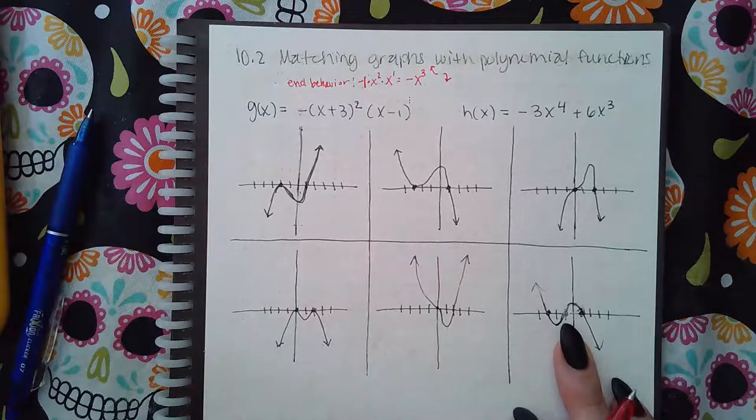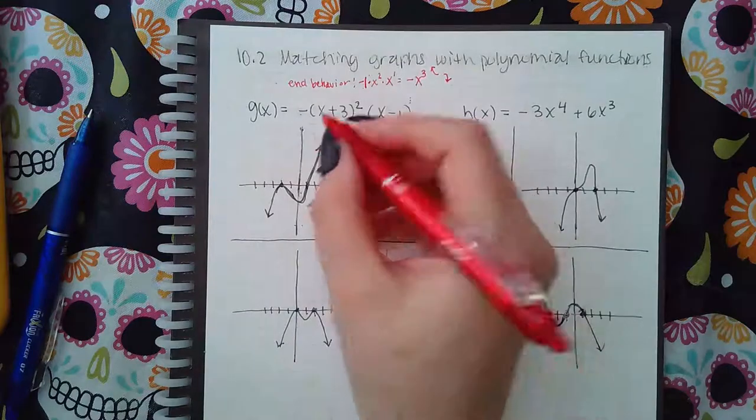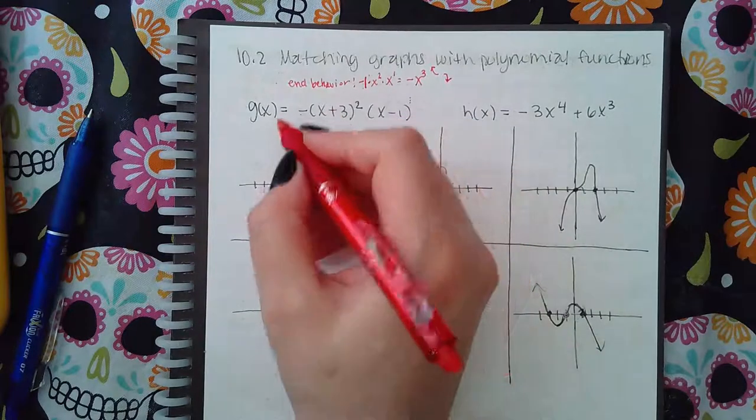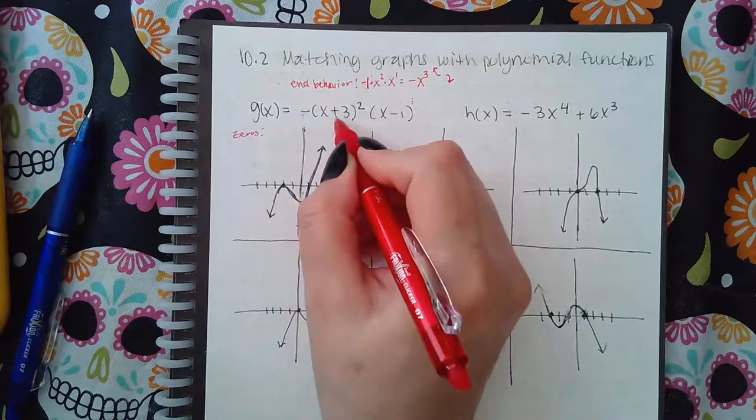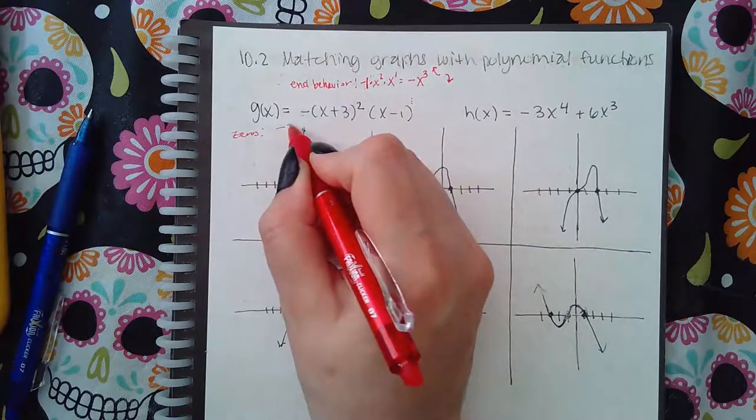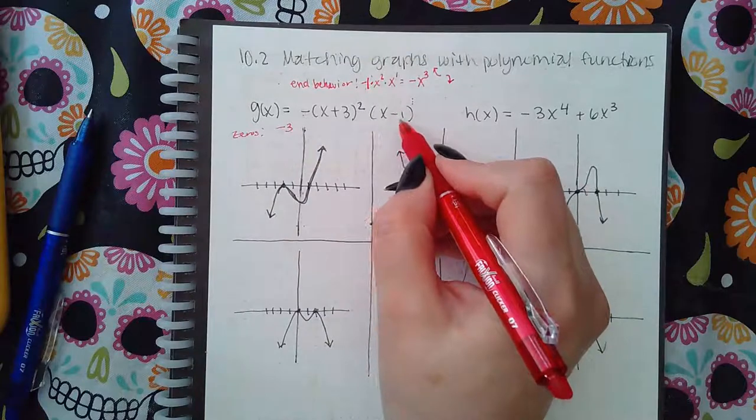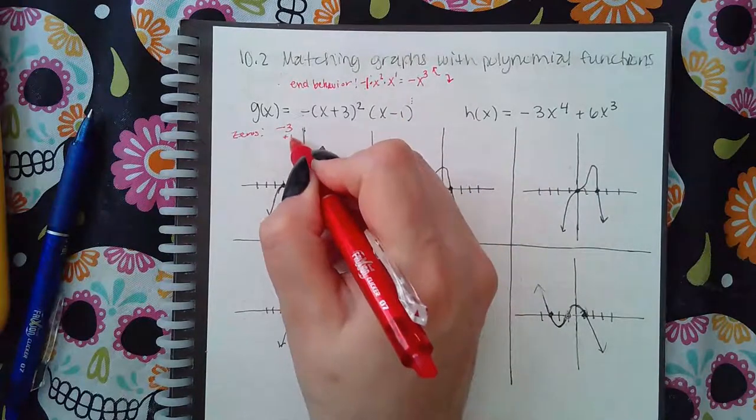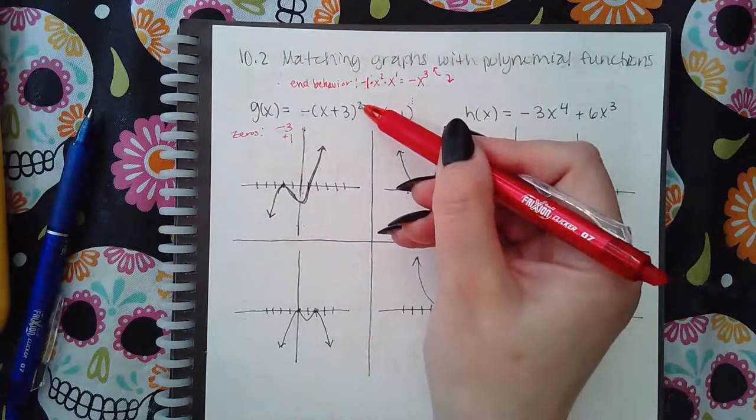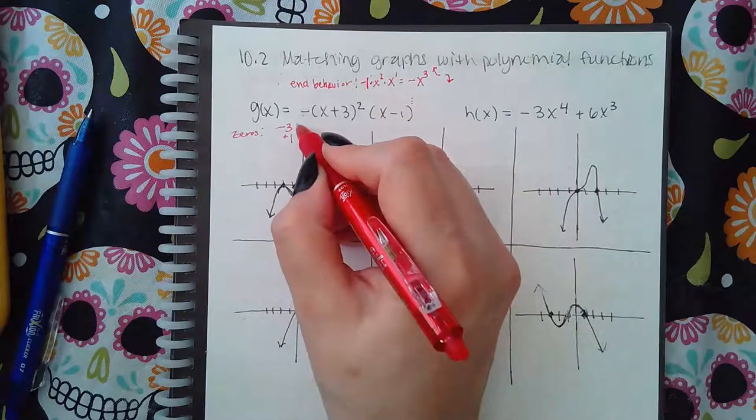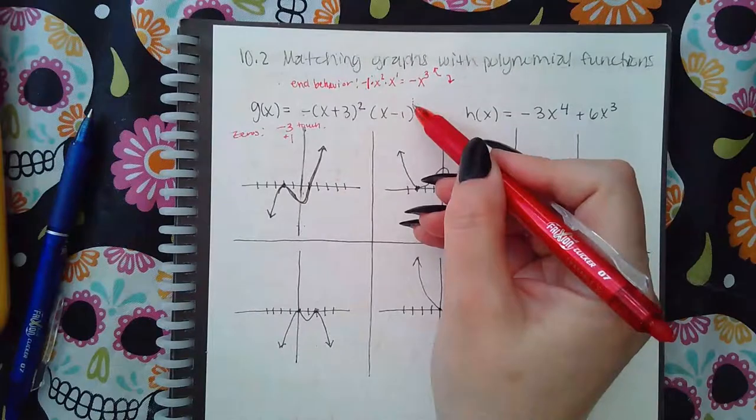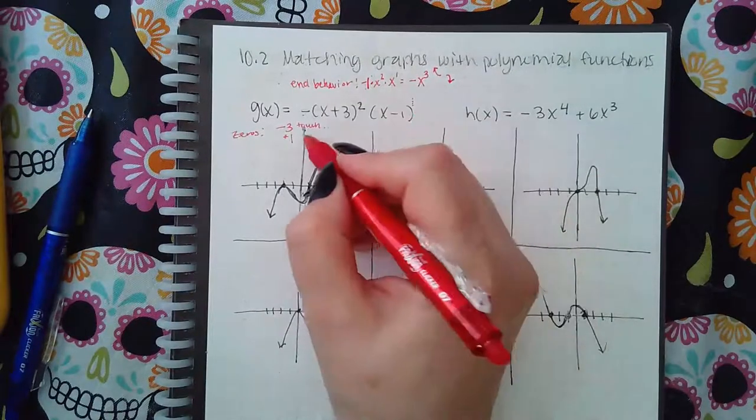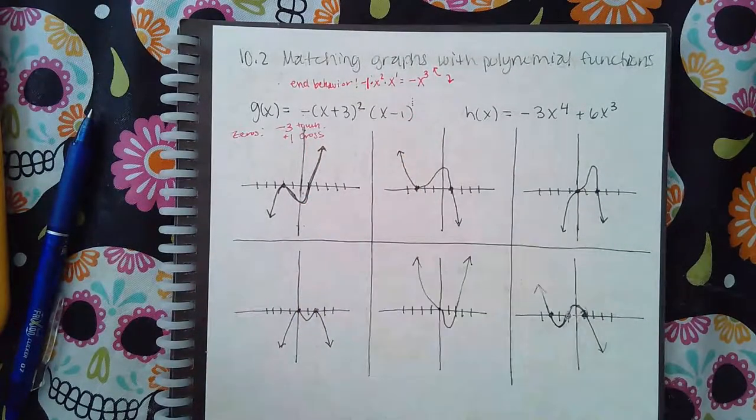Now what I need to do is determine the zeros and then the behavior around the zeros. So I have here that positive three, so zeros would be negative three. And here it's negative one, so the zero would be positive one. Now because this multiplicity is two, this one will only touch the x-axis. And because this one has a multiplicity of one, it will cross the x-axis.